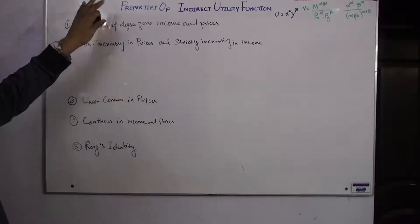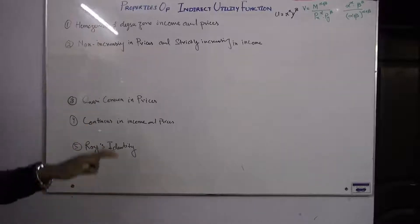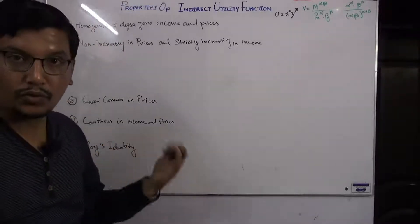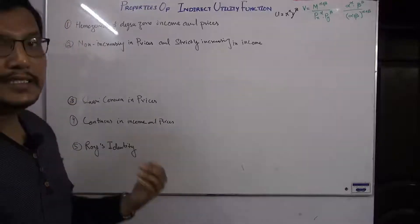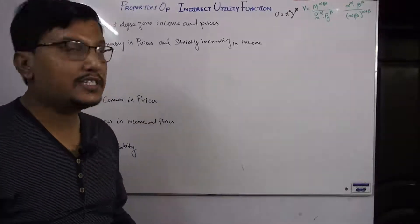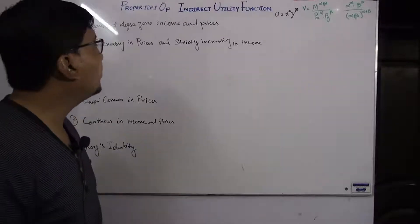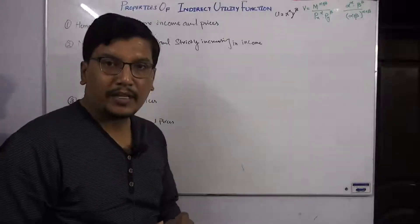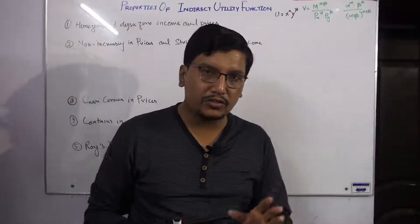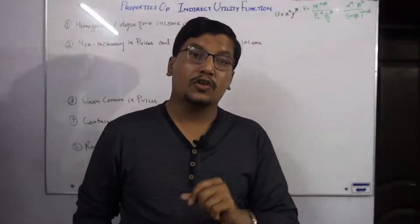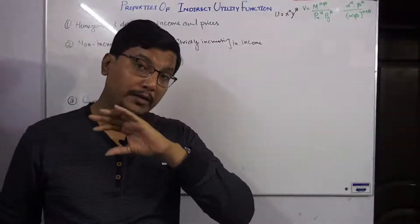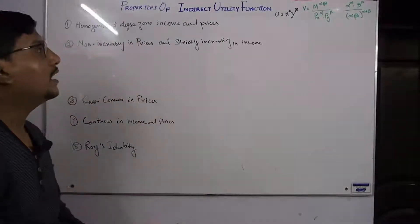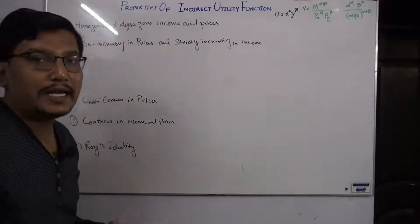We have four or five different properties and we will discuss them one by one. Property number one: the indirect utility function is homogeneous of degree zero in income and prices. We know that the indirect utility function is a function of prices and income, and it is homogeneous of degree zero in both.